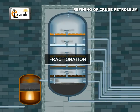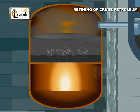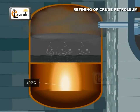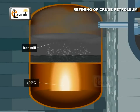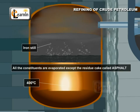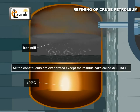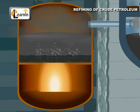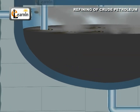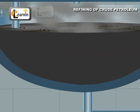Step 3: Fractionation. The crude oil is heated up to 400 degrees Celsius in an iron still. All the constituents are evaporated except for the residue called asphalt. The vapor is then passed through the fractionalization column.